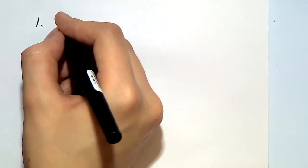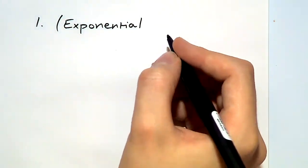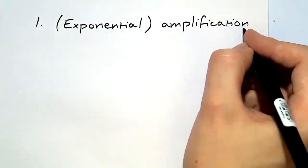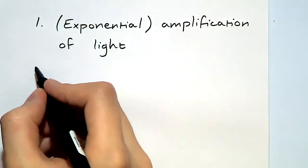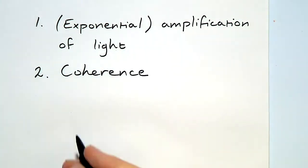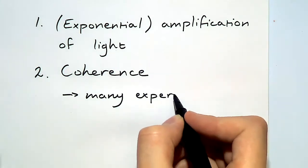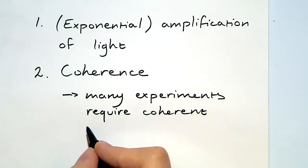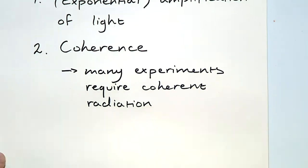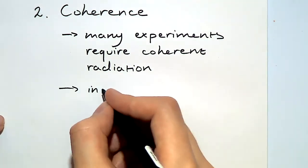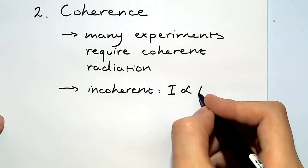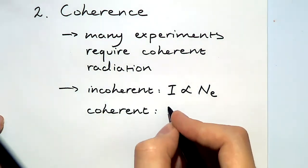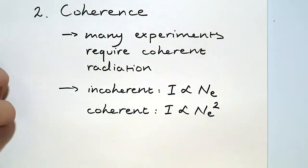First of all, we want amplification of radiation intensity in the laser cavity, and we also want that radiation to be coherent. Many experiments require coherent radiation, but also it's a question of intensity. For an incoherent light source, intensity scales with the number of oscillators. But for a coherent one, it scales with the square of the number of oscillators.